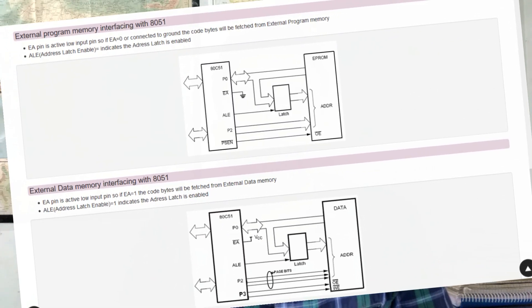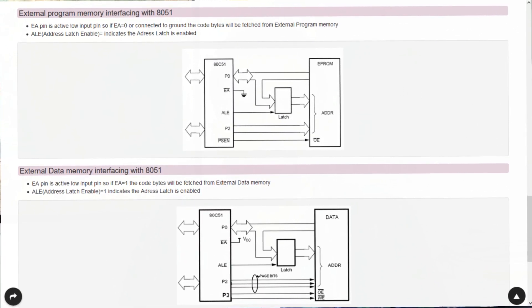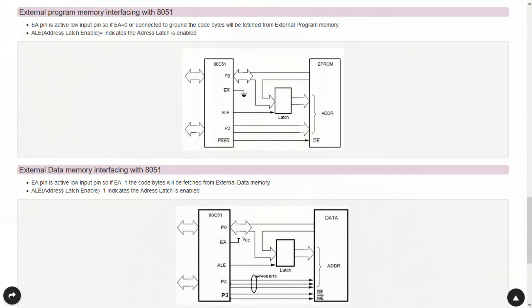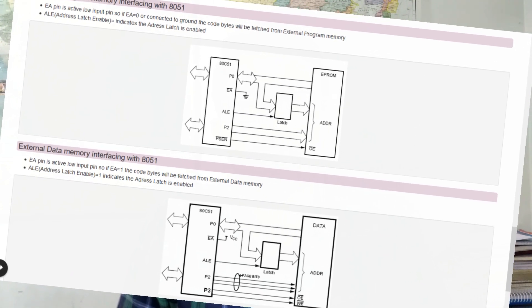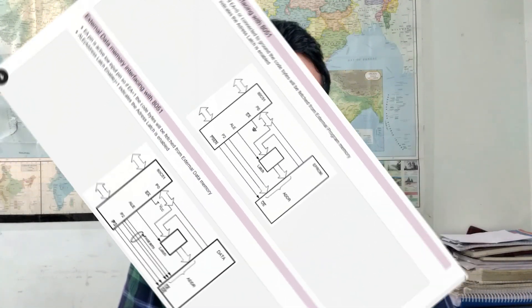Role of PSEN bar pin (program strobe enable): This is very important pin which is used along with the external access. This pin should be connected to the output enable of your external ROM which is interfaced with your 8051 microcontroller, and at the same time EA bar pin should be connected to the ground, that is zero.